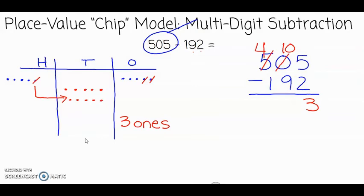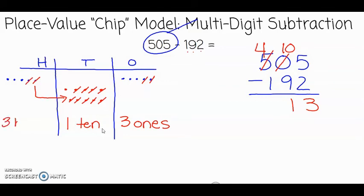Now I am ready to subtract the nine tens. There is one ten remaining. If we look at the algorithm, we see ten tens minus nine tens is one ten. And if I look at the hundreds column, I see the number 192 has one hundred, so I will take away one hundred. And there are three hundreds remaining.